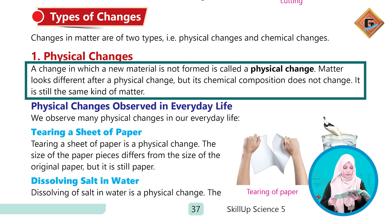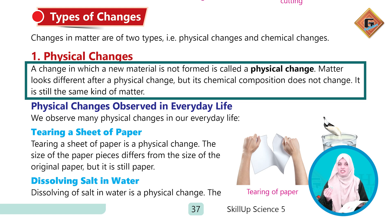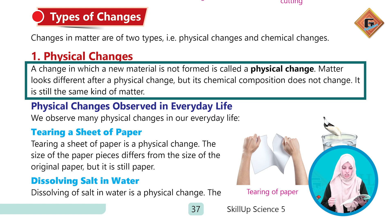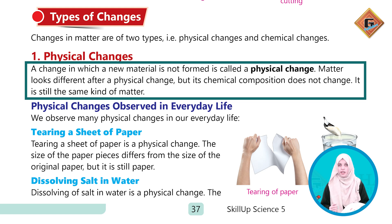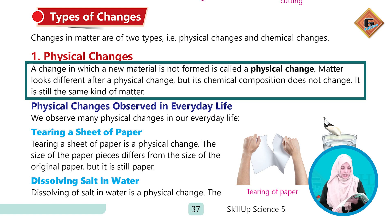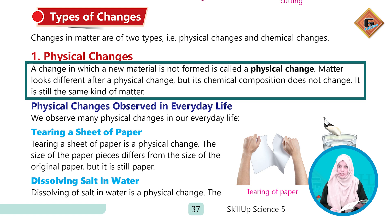Matter looks different after physical change but its chemical composition does not change. اگر ہم کسی matter کو change کرتے ہیں تو اس کی physical appearance میں change آ سکتا ہے لیکن اس کی chemical composition بالکل بھی change نہیں ہوگی۔ It is still the same kind of matter — وہ اپنی composition میں اسی طرح کا same matter ہی رہے گا۔